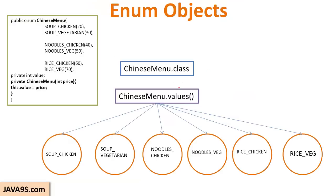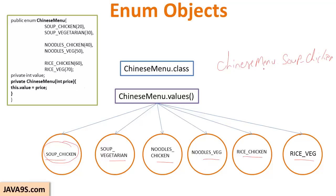Values() gives the array of enumerated types. If you look in detail, values() actually gives you six different objects for this ChineseMenu class, and each object is a singleton for a constant. For soup_chicken, this is a singleton object — calling ChineseMenu.SOUP_CHICKEN will give you the same object that values() returns. All objects returned by values() are always singletons. Internally it uses a singleton factory pattern.